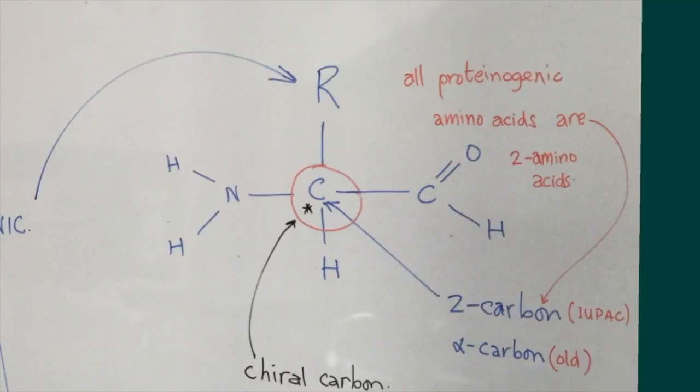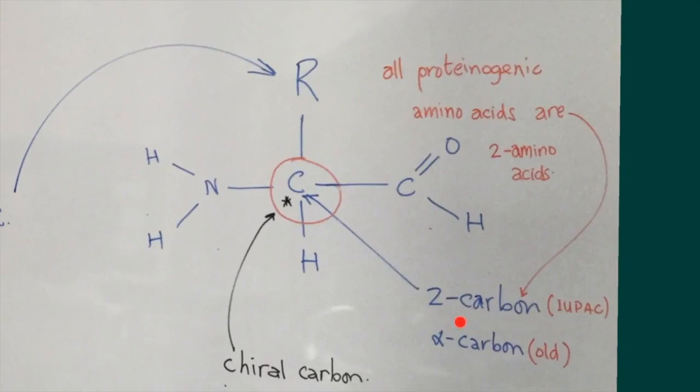And all of these 20 amino acids are designated as two carbon amino acids by the IUPAC because this carbon atom is attached to the carboxylic acid group on one side and to the amine group on the other side, meaning that this carbon, which was formerly known as the alpha carbon, is now designated as the two carbon.